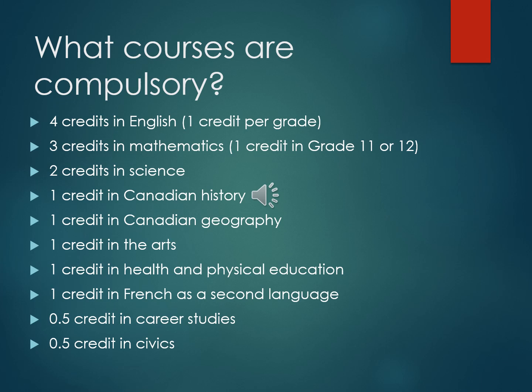What are the courses that are compulsory to obtain your secondary school diploma? You must complete four credits in English — one credit per grade — three credits in math, with one of those credits being a senior level grade 11 or grade 12 math, two credits in science, one credit in Canadian history, one credit in Canadian geography, one credit in the arts, one credit in health and physical education, one credit in French as a second language, half a credit in career studies, and half a credit in civics.